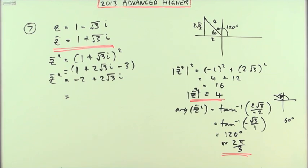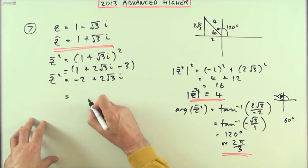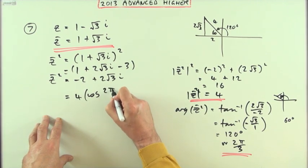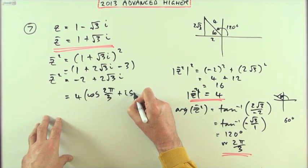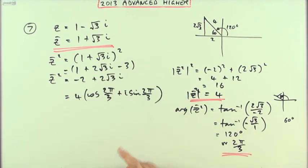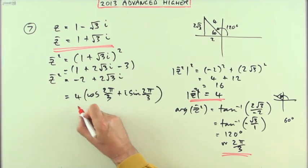Then I can go back over here and say, so that was four cos, whichever you choose, maybe just choose the 2π/3 plus i sine 2π/3. And of course 2π/3 is fine because it's less than π, it's less than 180°.